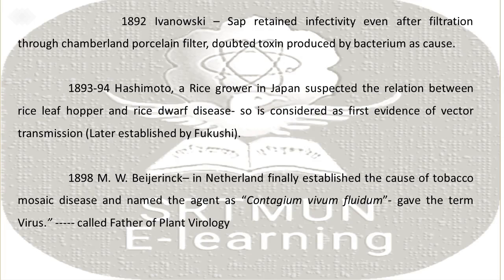Transmission was later established by Fukuoe. In 1898, M. W. Beijerinck in the Netherlands finally established the cause of tobacco mosaic disease and named the agent. He introduced the term 'virus' and is called the father of plant virology.